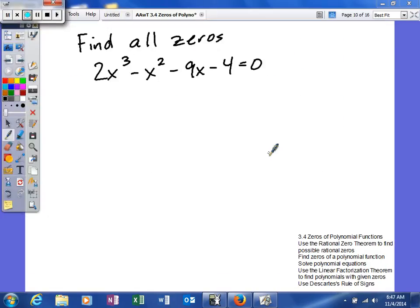All right, last example of these that we're going to try to look at. Again, we're going to try to find all the zeros. So, first thing we're going to lean on is the possible rational zero theorem.